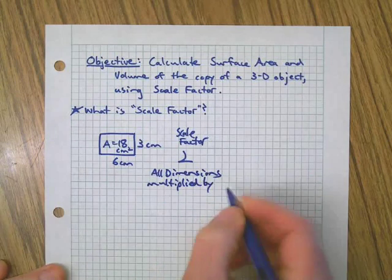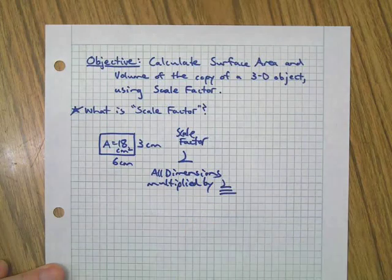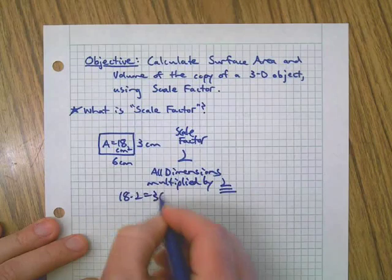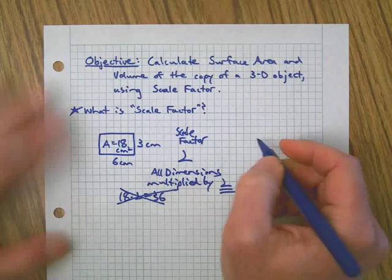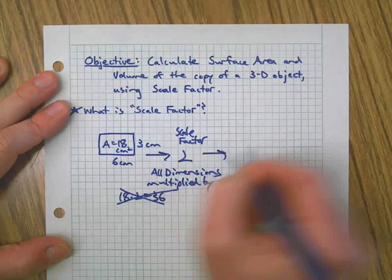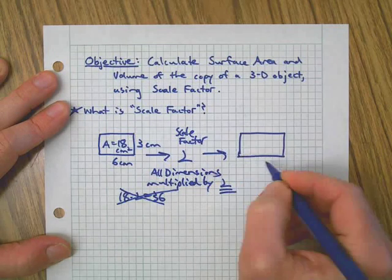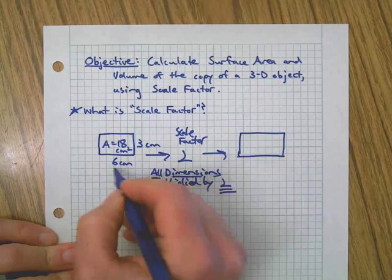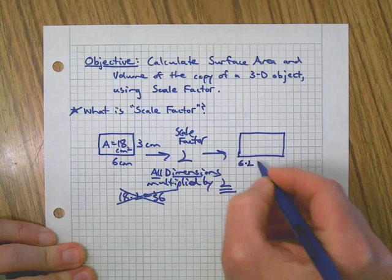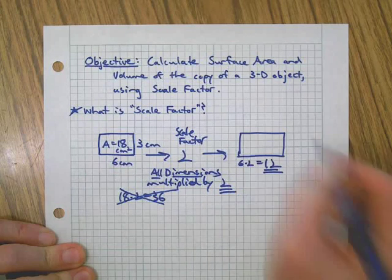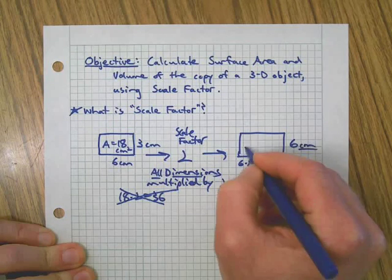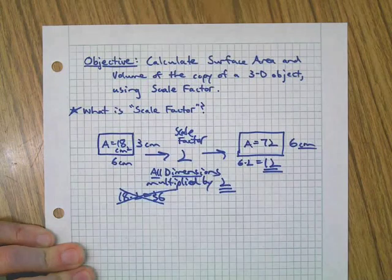If I asked you what the area of that new rectangle is going to be, some people will mistakenly say 36 because 18 times 2 is 36. That is wrong. Here's what happens with scale factor: all dimensions are multiplied by 2, so the 6 becomes 12 and the 3 becomes 6. When you find the area it's actually 72 — it's not twice as big, it's four times as big.